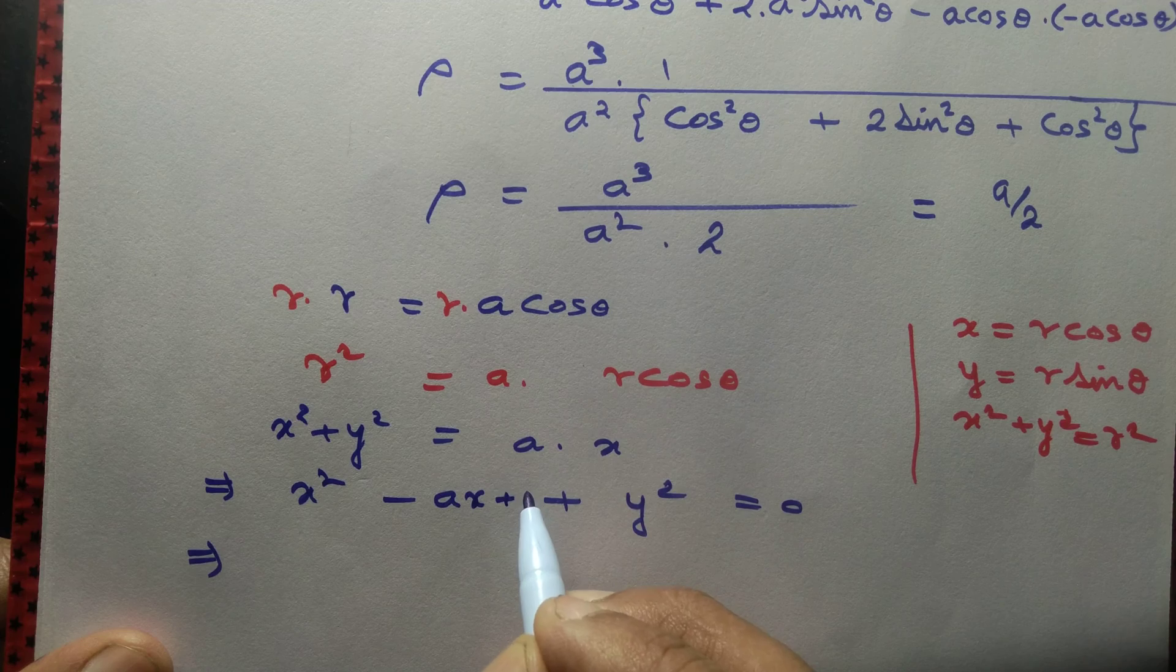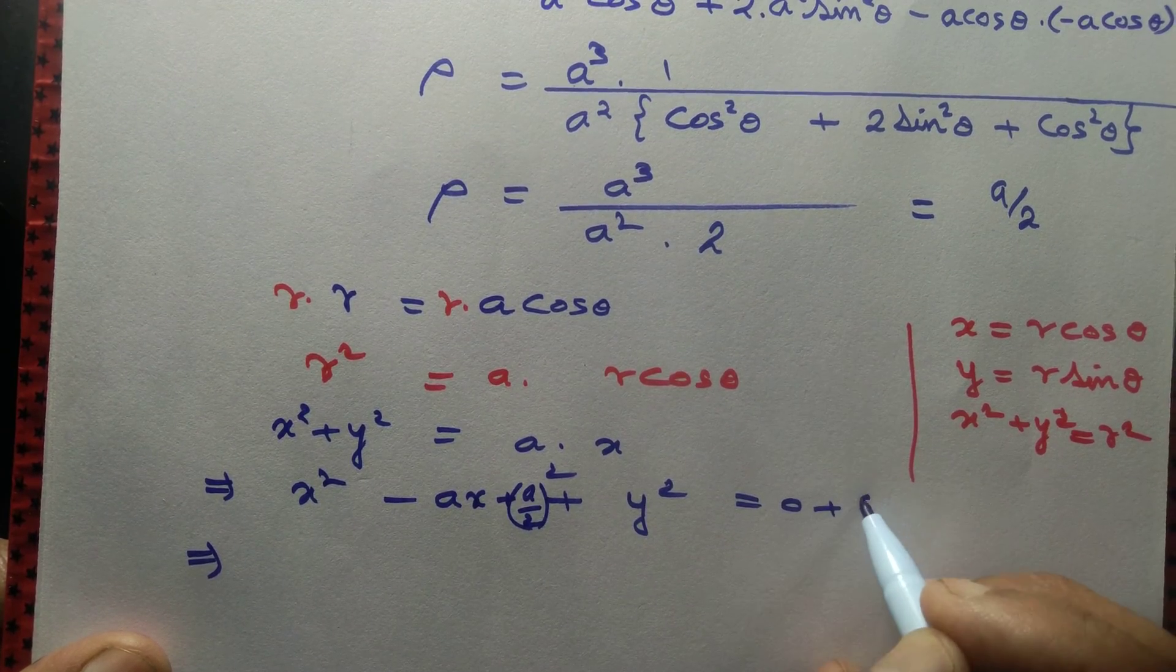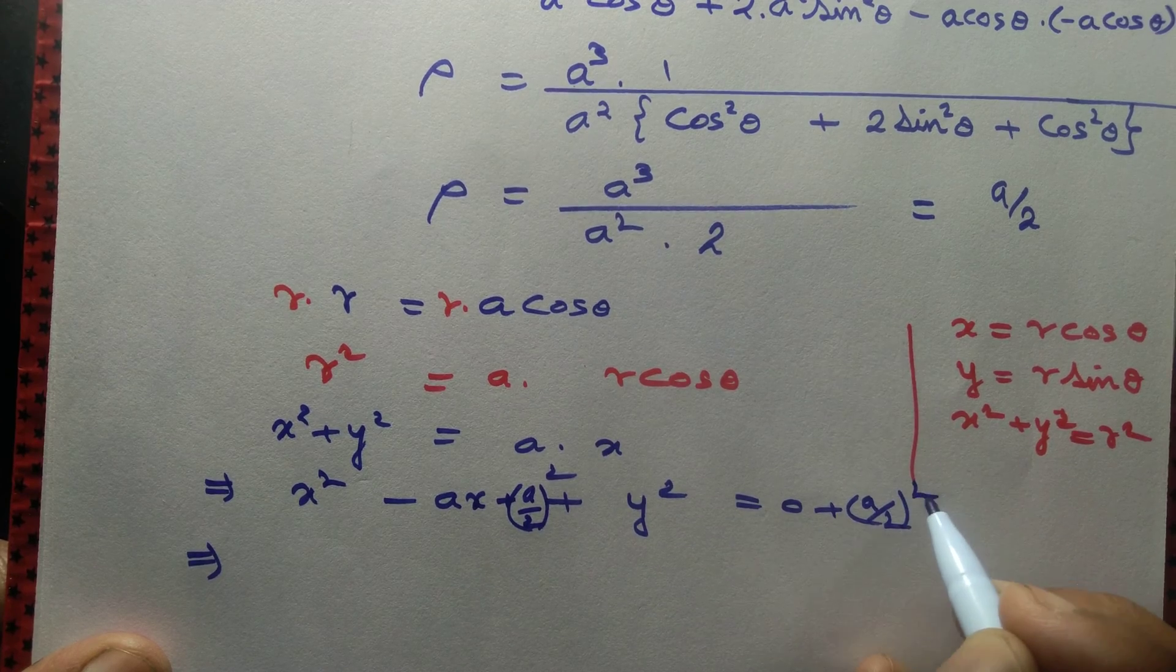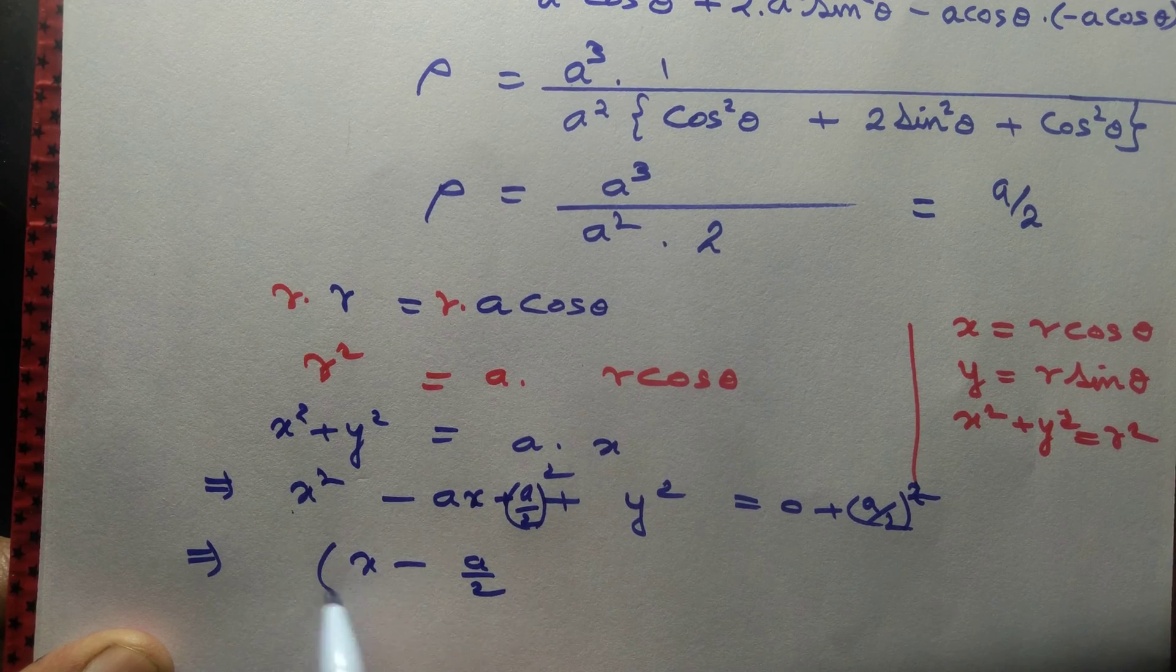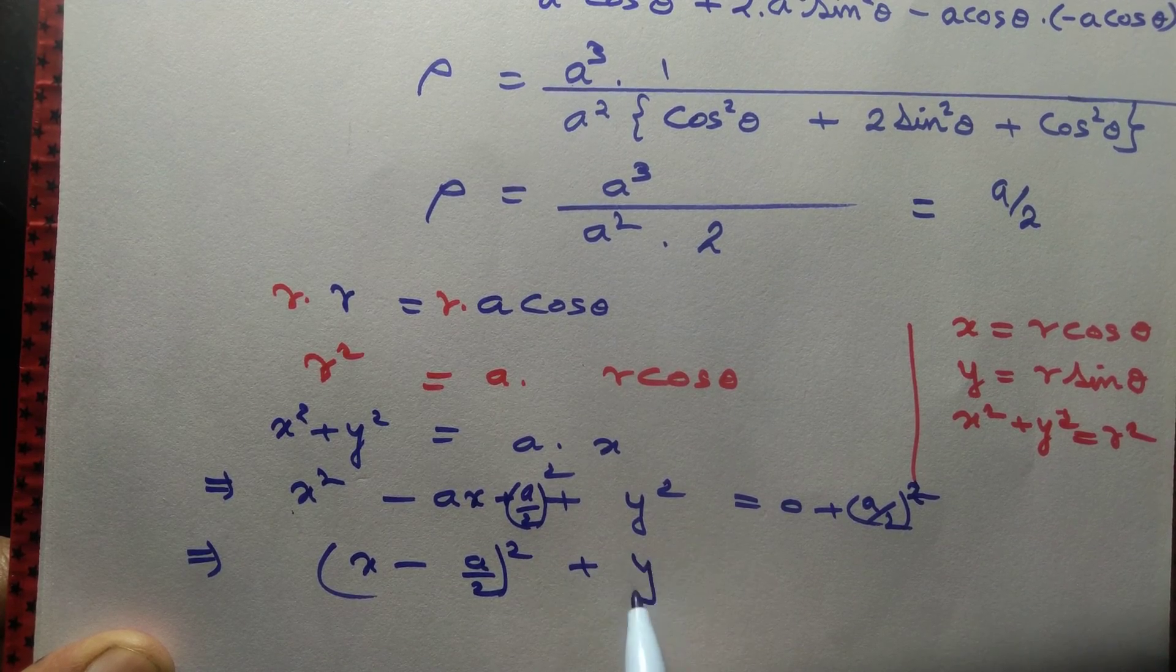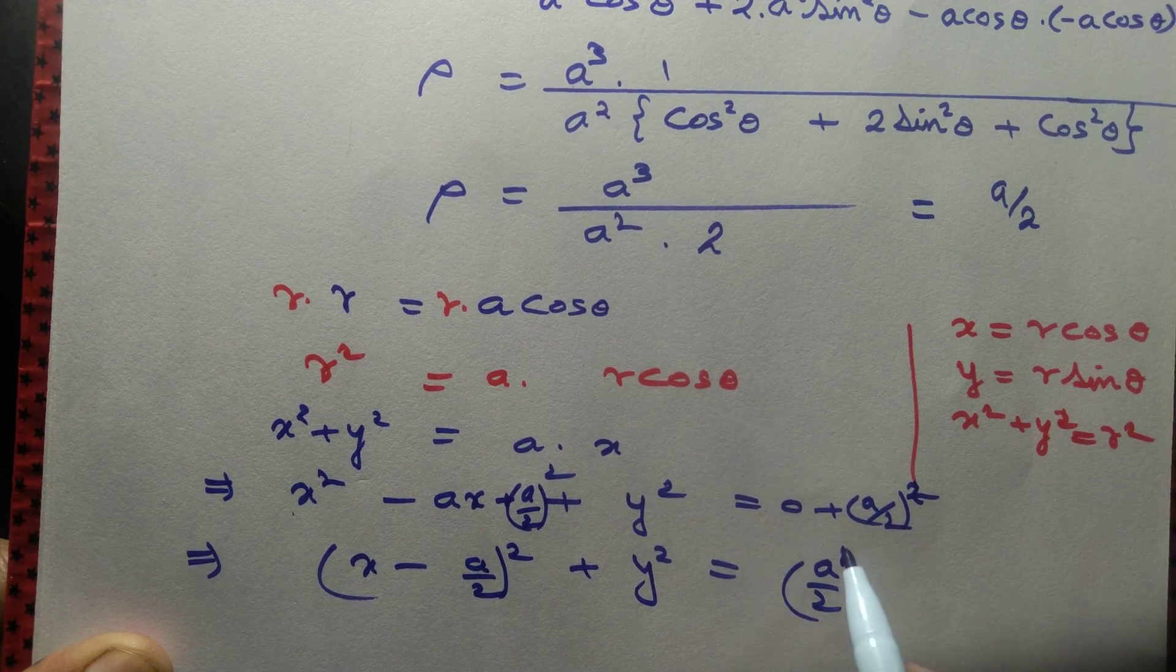Let's complete the square: (a/2)². We add (a/2)² to the left-hand side as well as right-hand side. So this equals (x - a/2)² plus y² equals (a/2)².